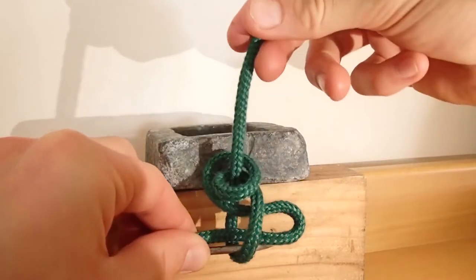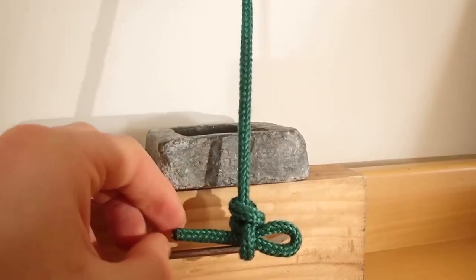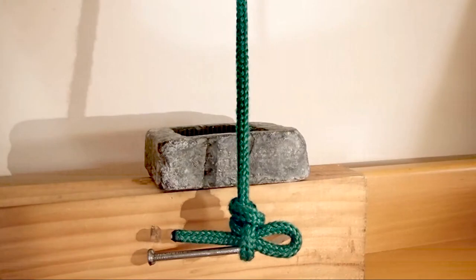To tighten, pull on the working end while holding the standing end for stability and watch the round turn close down on the slipped fixed loop.